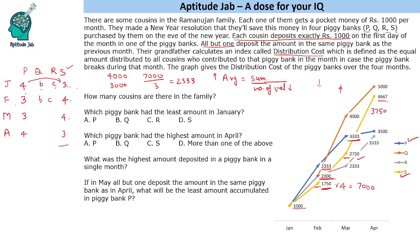For bank R: starting at 2000 and becoming 2333, the average goes down, meaning the number of people increased. Taking two people in month one (average 1000), two people in month two (total 4000 divided by 2 equals 2000), three people in month three (total 7000 divided by 3 equals 2333) — that makes sense. In the fourth month there is no change, so the value is 2333. Bank R has 2, 2, 3, 3 people across the months.